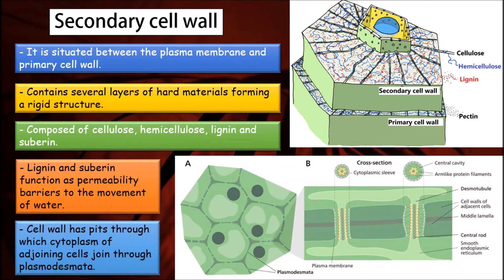Cell wall has pores through which cytoplasm of adjoining cells join through plasmodesmata, which allows cell-to-cell communication.